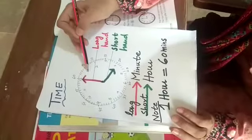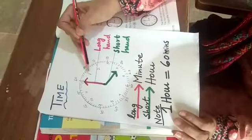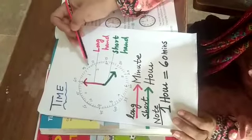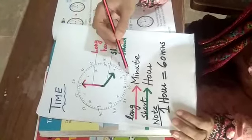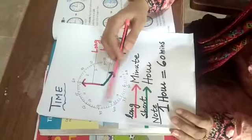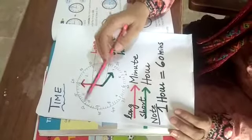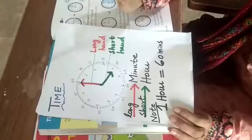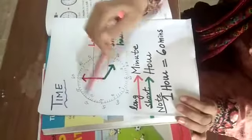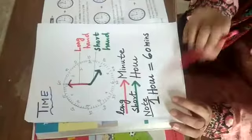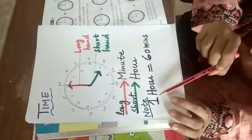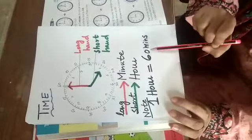After 12, when the long hand is going to 1, it will become 5 minutes, and then 10, then 15, then 20, 25, 30, 35, 40, 45, 50, 55, 60. Like this you have to complete the rotation. It stops at 60 and this means when the complete rotation is here, then it means 1 hour is equal to 60 minutes.